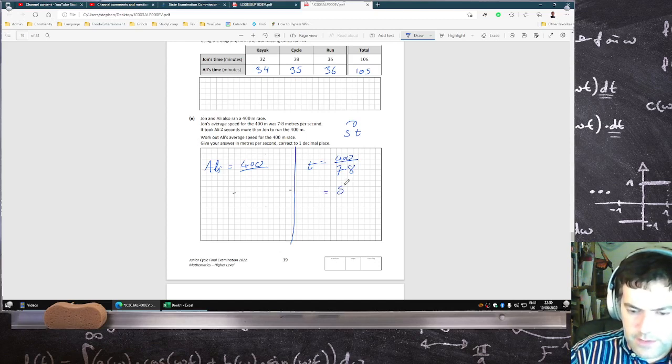That's 50. John's average speed was 7.8m, so 400 divided by the distance.